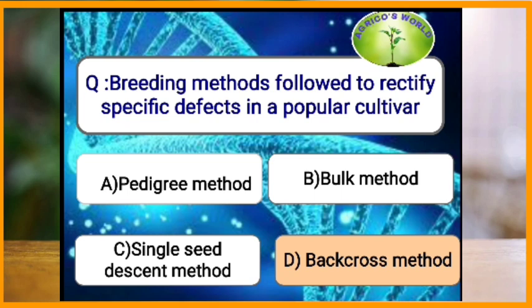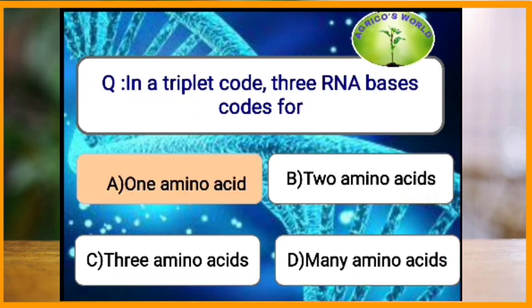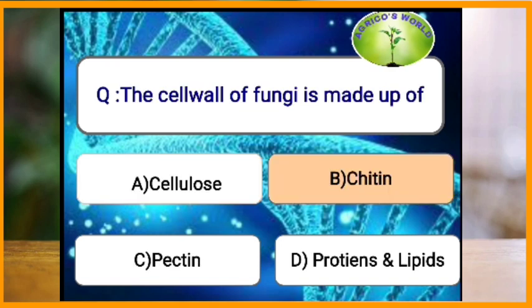What are the breeding methods followed to rectify a specific defect in a popular cultivar? The backcross breeding method is followed to rectify a specific defect in a popular cultivar. The variety developed through backcrossing is similar to the recurrent parent except in one trait. In a triplet code, three RNA bases code for one amino acid.